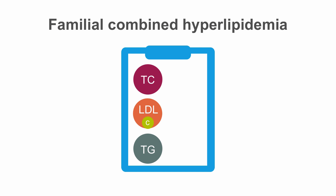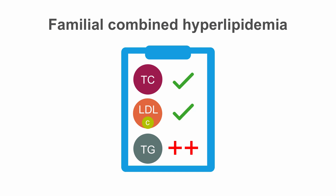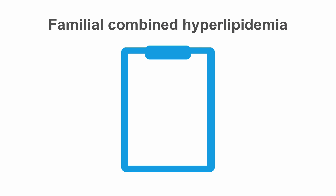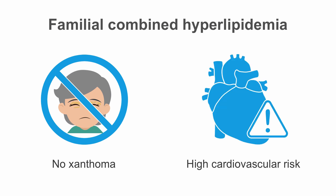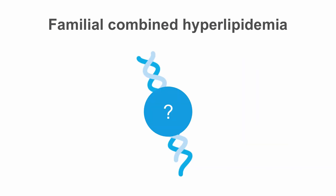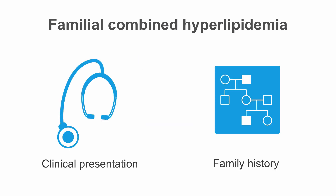Another common polygenic inherited lipid disorder is familial combined hyperlipidemia. Lipid abnormalities can vary, with patients showing elevated total and LDL cholesterol, elevated triglycerides, or both. In almost all cases, apolipoprotein B levels are also increased. Clinical signs like xanthoma are usually missing, but the incidence of cardiovascular disease is high. The genetic mutations responsible for this disease are still unknown, so patients are normally diagnosed based on clinical presentation and family history.